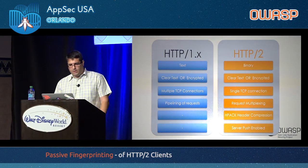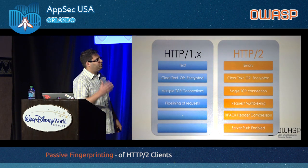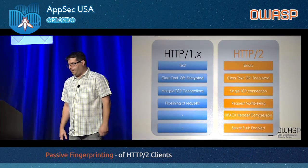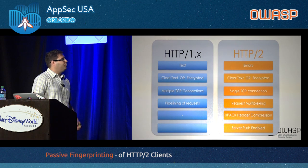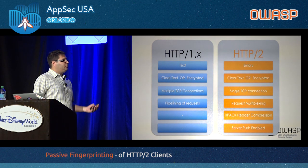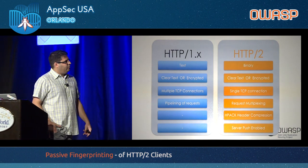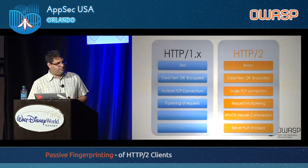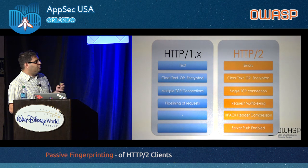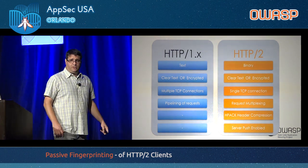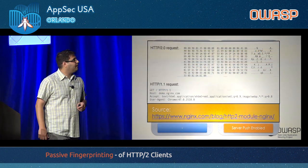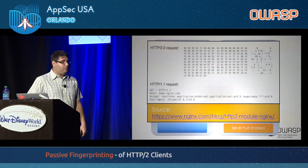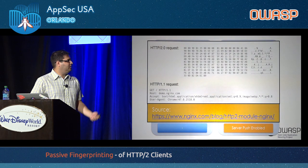A quick recap: version one of the protocol is text-based, version two is binary. Both can be transmitted over clear text or an encrypted channel. Concurrency in version one used multiple TCP connections; now we have a single TCP connection on which requests are multiplexed. Two new features in version two are header compression via HPACK and the server push concept. This illustration from the NGINX documentation site shows a request in HTTP/1 versus HTTP/2 to make clear what a binary protocol means.